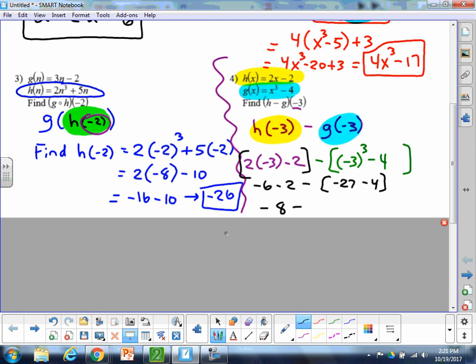And we're subtracting 4 from that. So I really have negative 8 from the first piece, minus, and then in this parenthesis, negative 27 minus 4 more is going to be negative 31. So negative 8, if I take away negative 31, should get me 23. So we're taking away a negative, so it's really like adding 31 to negative 8.